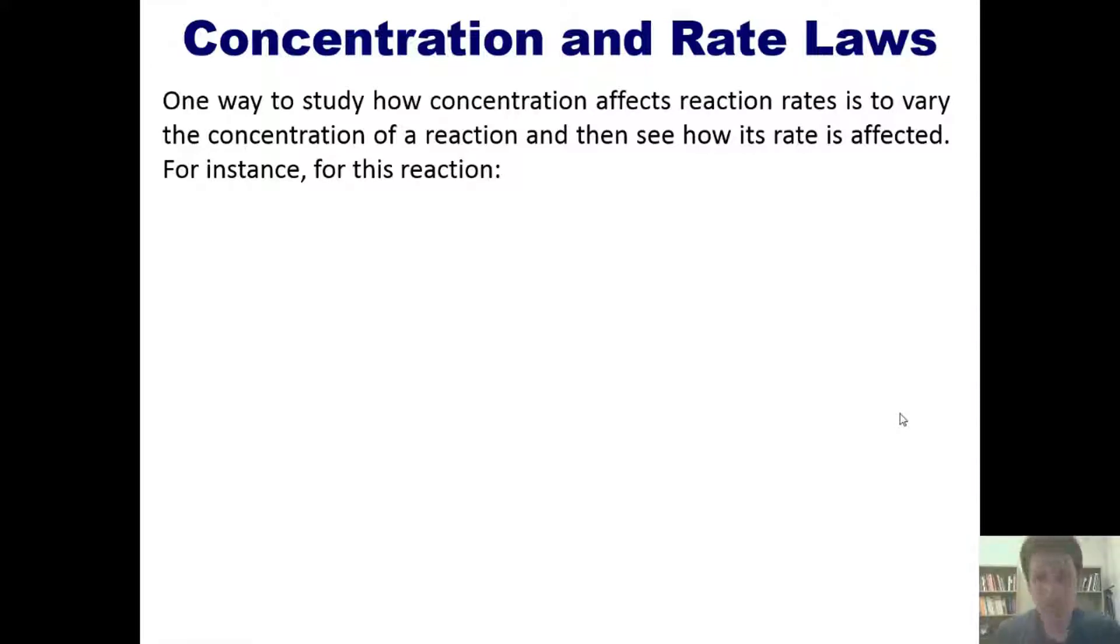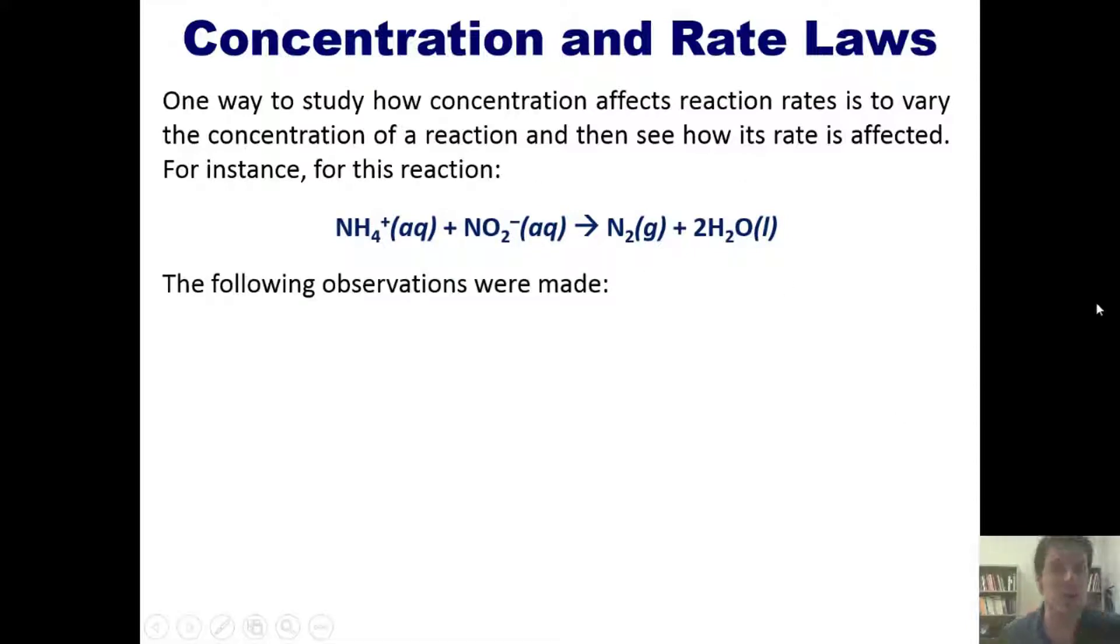Let's get started. So in real life, one way to study how concentration actually affects the rate or speed of a reaction is to vary the concentration of a particular reaction and then just measure how it affects the amount of time required to make that reaction go. So for example, in this reaction, ammonium reacting with nitrate to form N2 gas in water, the following observations happen to have been made.